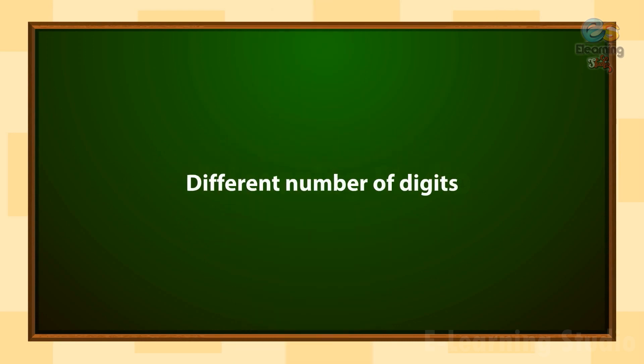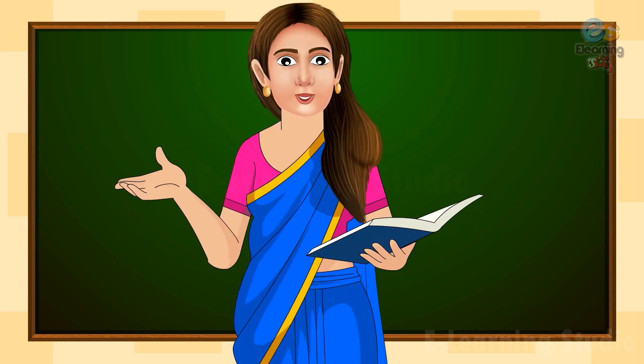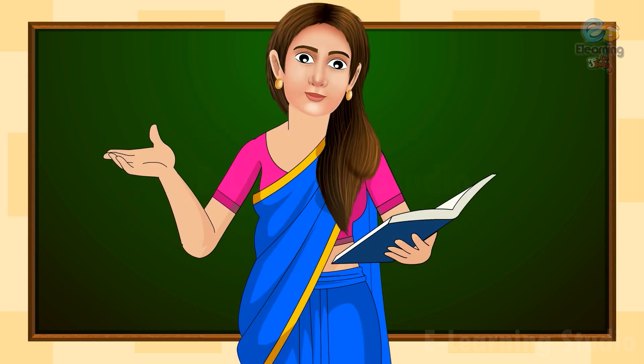Children, when we have a different number of digits, we compare the number of digits. The number with more digits is bigger. Let's take an example to understand this.